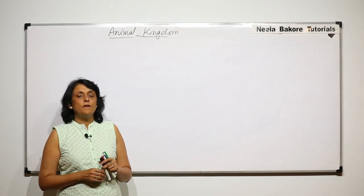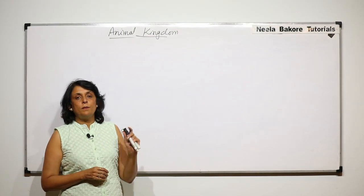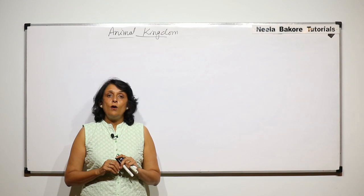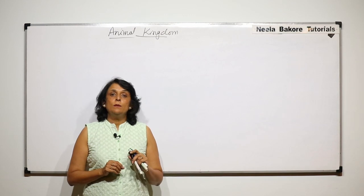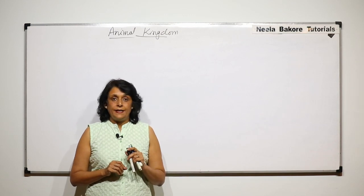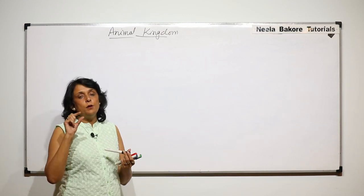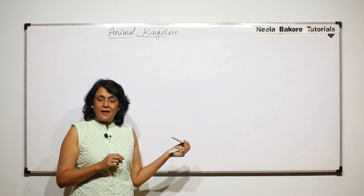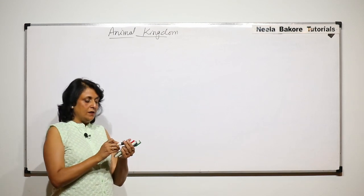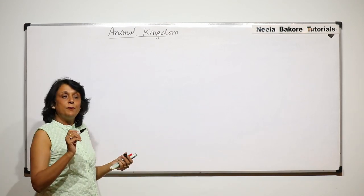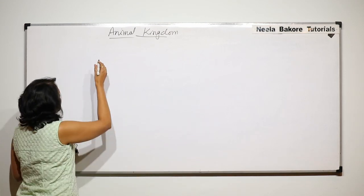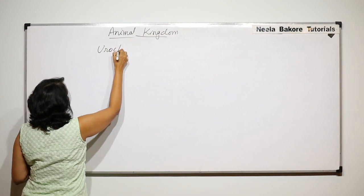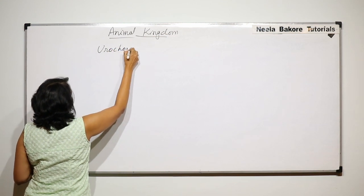In the previous video we talked about the brief outline of phylum Chordata. Now we will take individual subphylums and discuss examples which are under this. So the first one is Urochordata.